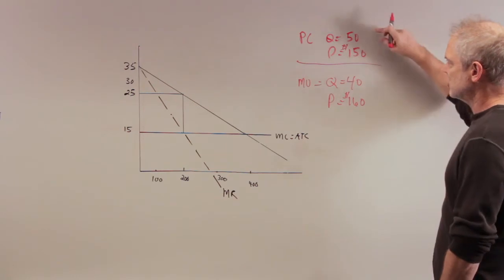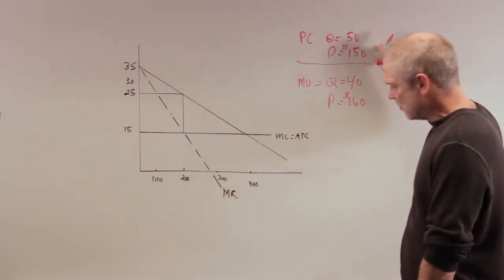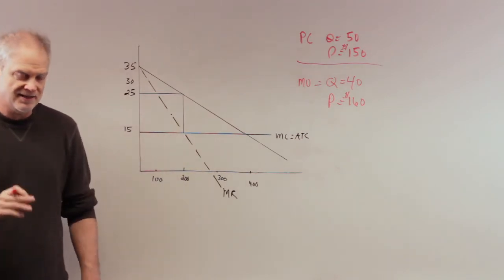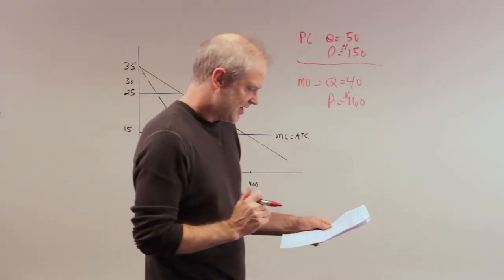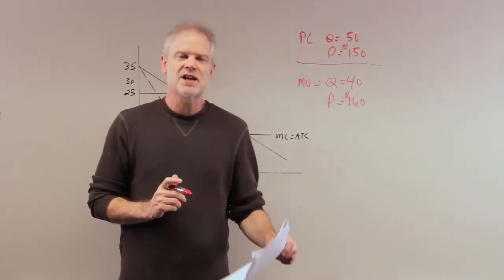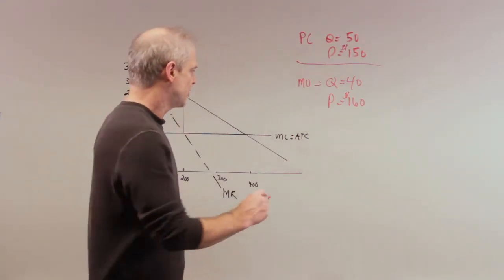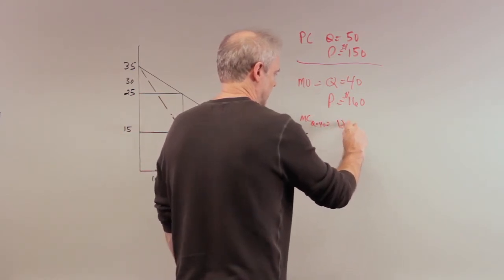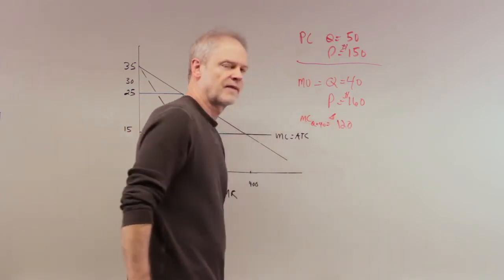That's what they've given us. So in the perfect competition, Q would be 50, P would be $150. For the monopoly, Q is 40, P is $160. Now, they tell you this. They say the marginal cost of the 40th unit is $120. So the marginal cost at Q equals 40 is equal to $120.